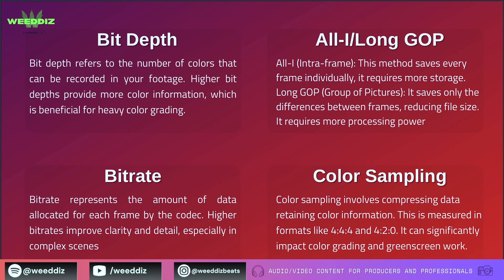Then we have chroma subsampling, or color sampling — basically how many colors are sampled. It is different from bit depth, because bit depth concerns how many shades can be represented for each color. Kind of impossible to notice with the human eye, but it is useful for green screen work and heavy color grading. Color sampling is measured in a format like 4:2:0, which reduces color data for smaller file sizes, or 4:4:4, which maintains full color detail. It's best for high-quality content, but it requires more storage.